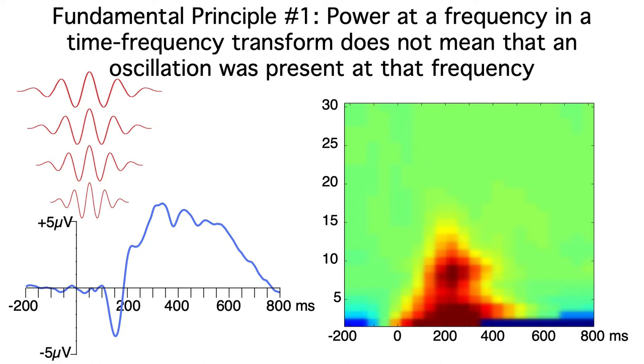Here we've applied the transform after averaging. The time frequency representation just tells us a set of wavelets we need to sum together to recreate the conventional average ERP waveform. Again, that doesn't mean that the ERP waveform actually consists of a set of oscillating wavelets.